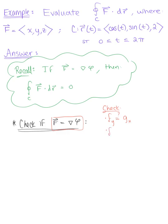We also need to check that the partial derivative of F with respect to Z is equal to the partial derivative of H with respect to X, and that the partial derivative of G with respect to Z is equal to the partial derivative of H with respect to Y. If all three of these properties hold true, then we can confirm that yes, this vector field is conservative.